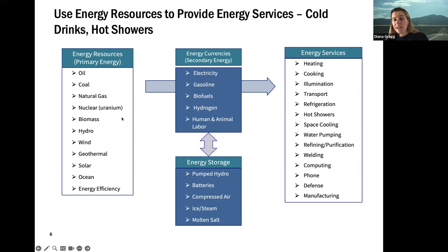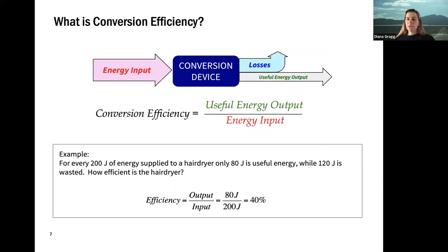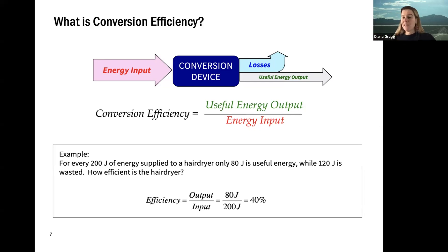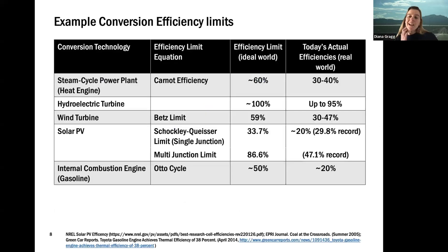Each time we do that conversion, we have losses. A simple equation called conversion efficiency measures those losses — you look at how much useful energy you got out compared to how much you put in. You divide the output over the input to get your efficiency. A lot of our different conversion systems have very different efficiencies, even in the ideal world, which represents the best you could ever do.